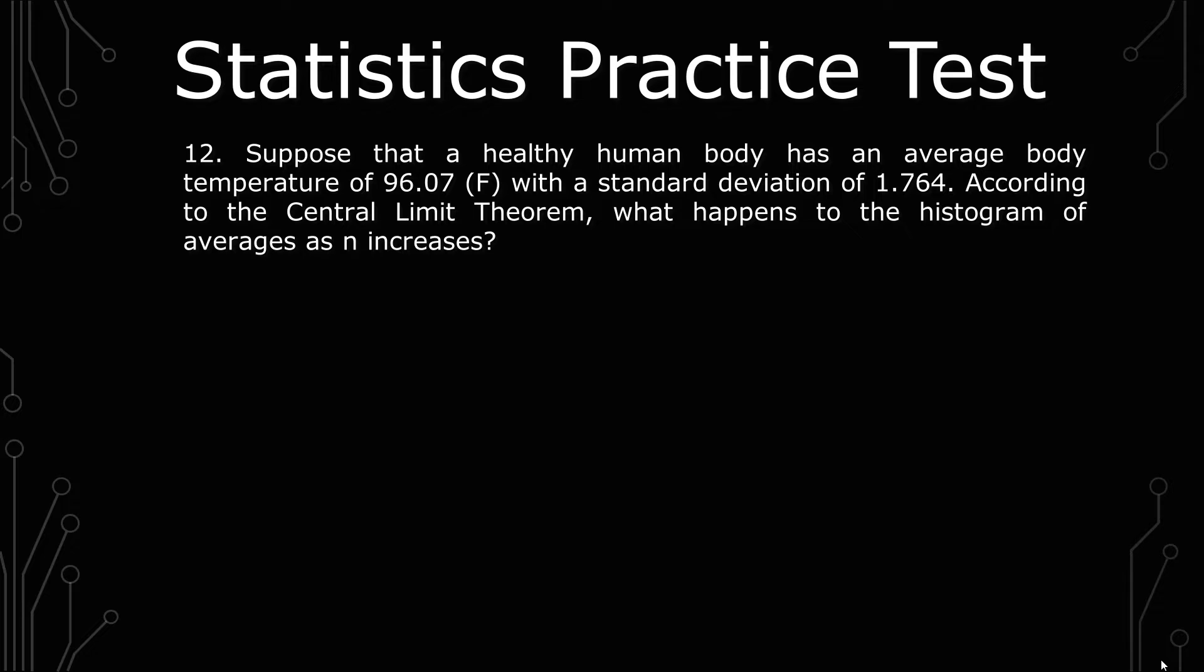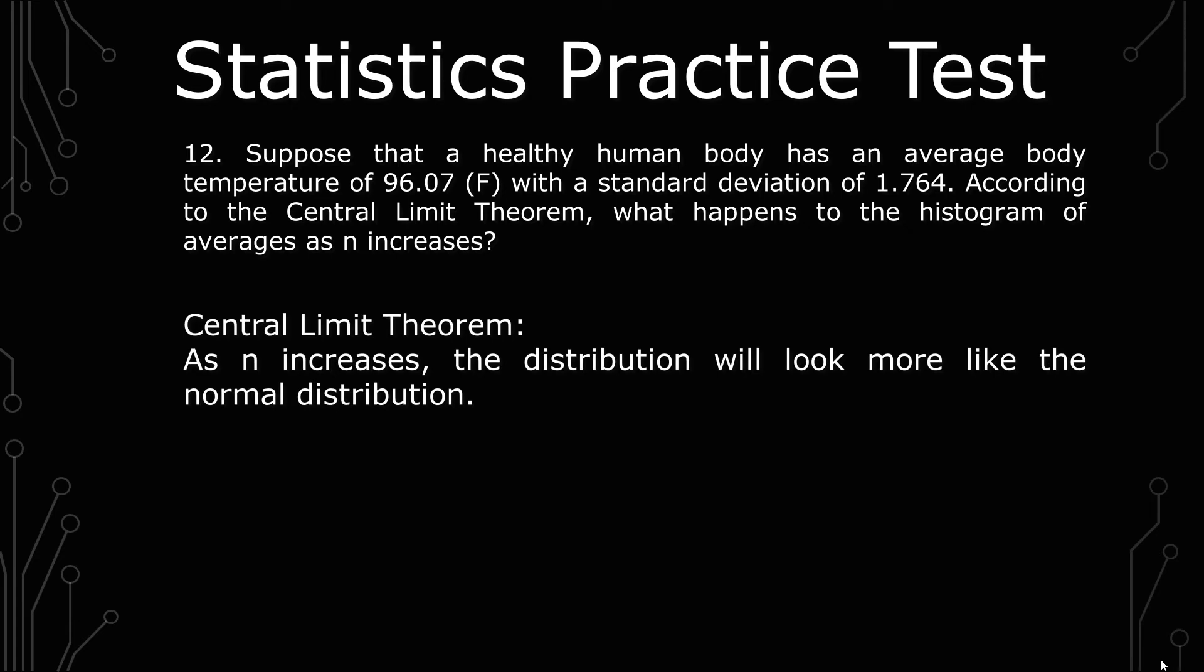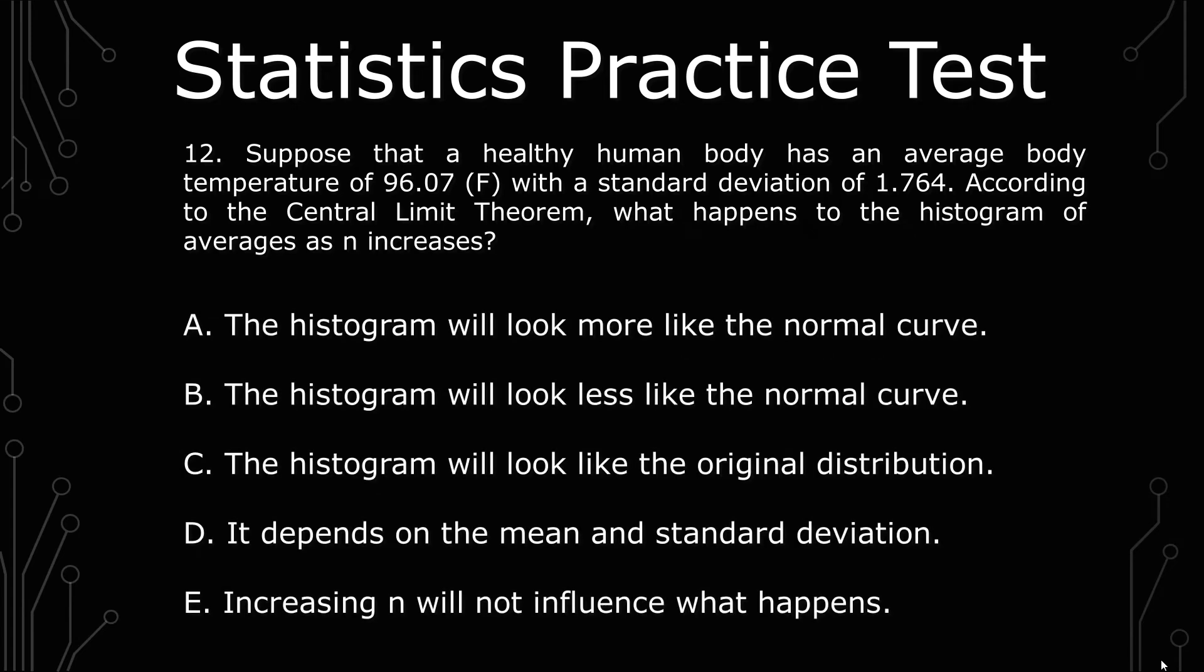For central limit theorem, it is generally understood as, as n increases, the distribution looks more like a normal distribution, regardless of what the original distribution is. Now there are very rare cases where the original distribution pans out, but those are exceptionally rare.